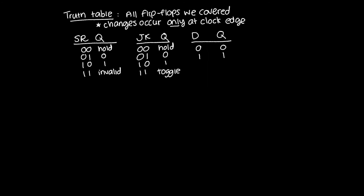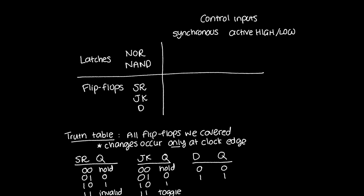The D flip-flop has only one input corresponding to the set and reset rows of the SR truth table where inputs are always opposite. You can think of the D flip-flop as Q follows D at the next clock edge. This will become clearer when we do timing diagrams. Control inputs are the inputs that control the output of latches and flip-flops — for NAND/NOR latches they are set and reset; for SR, JK, and D flip-flops they're named accordingly.